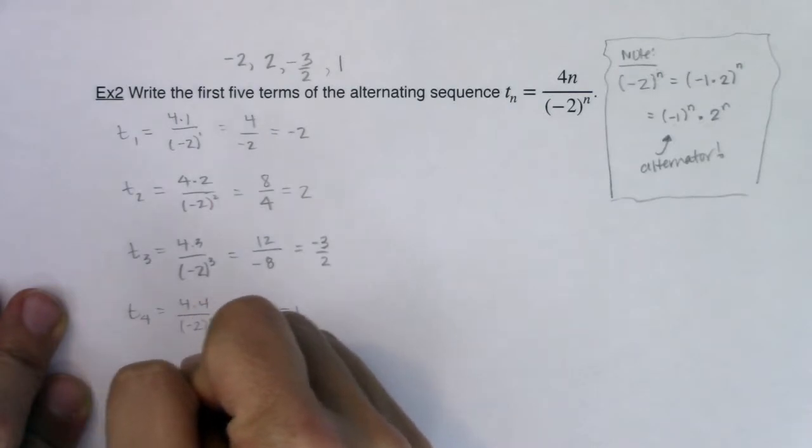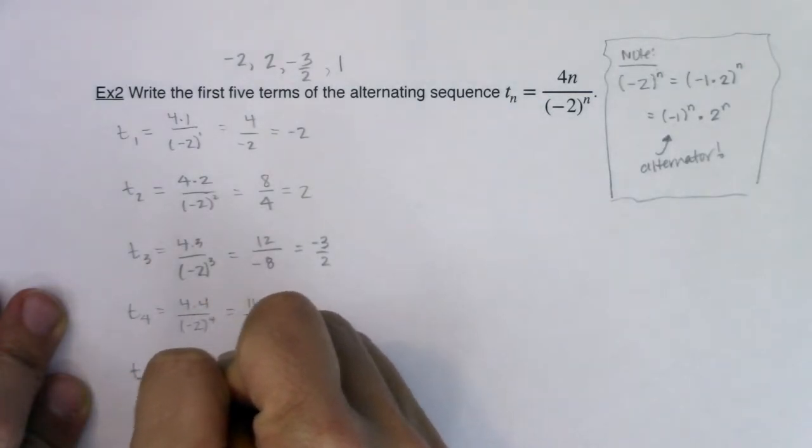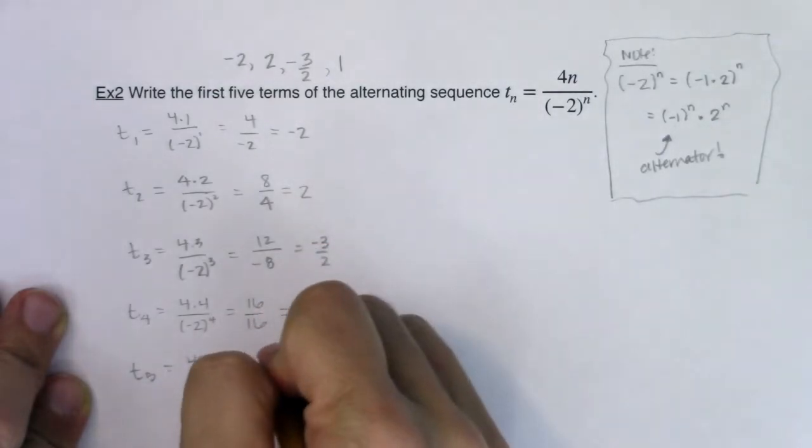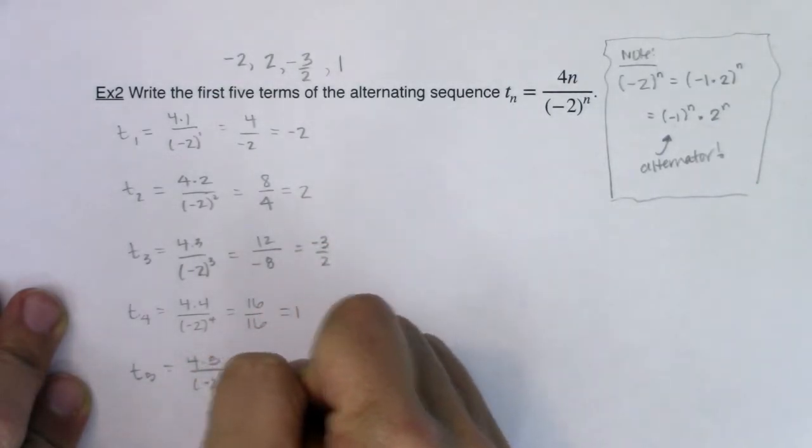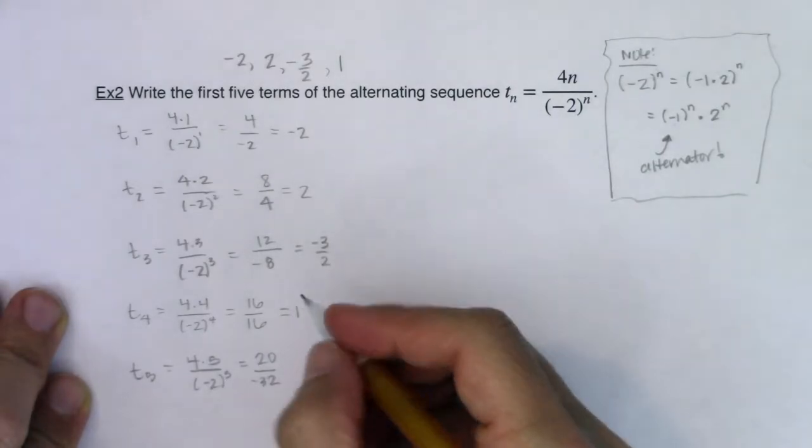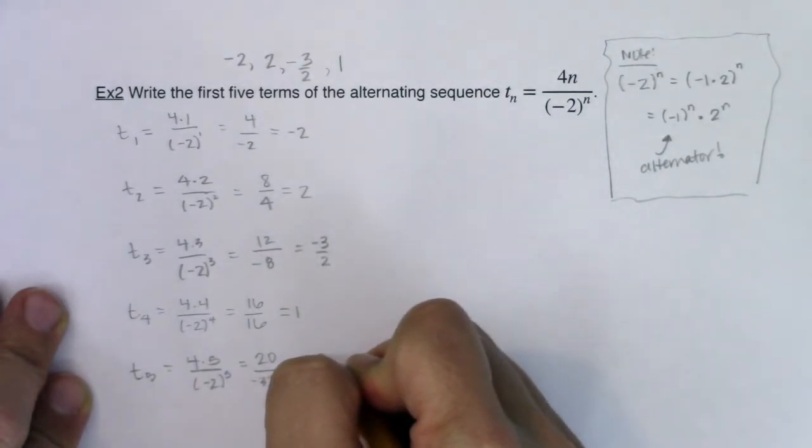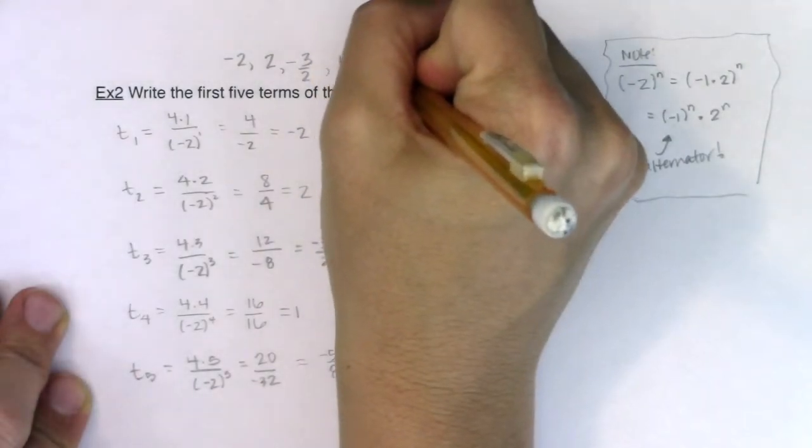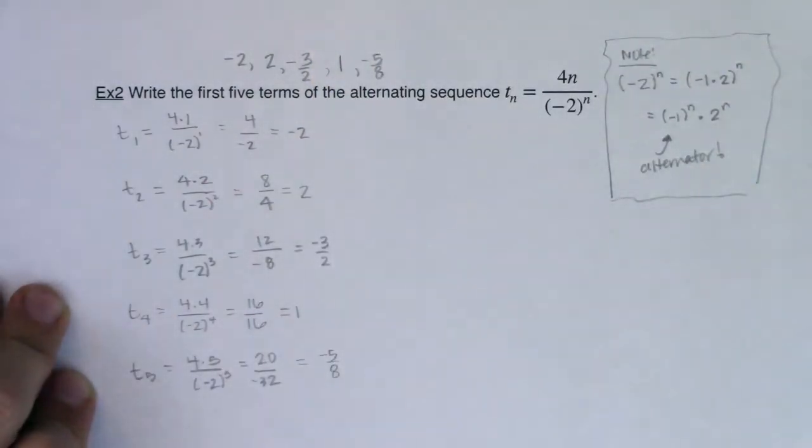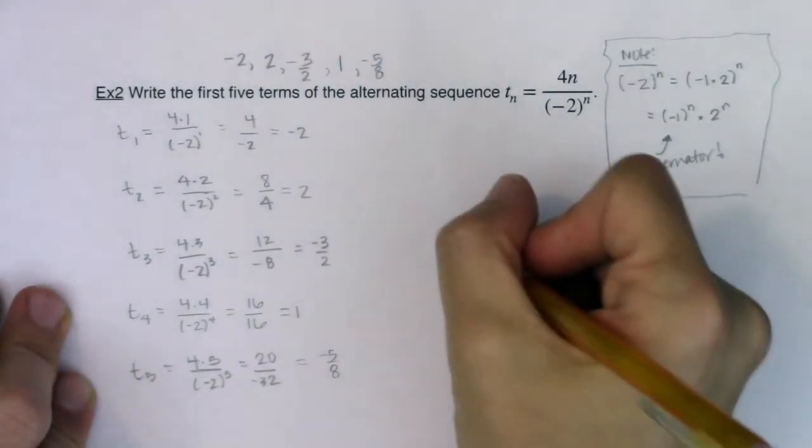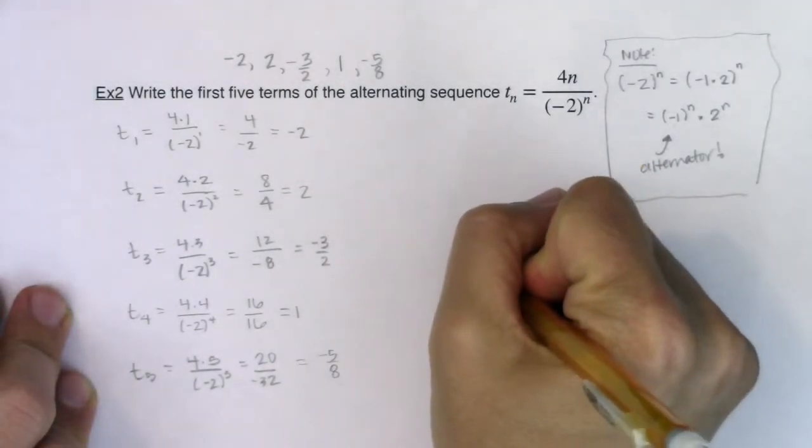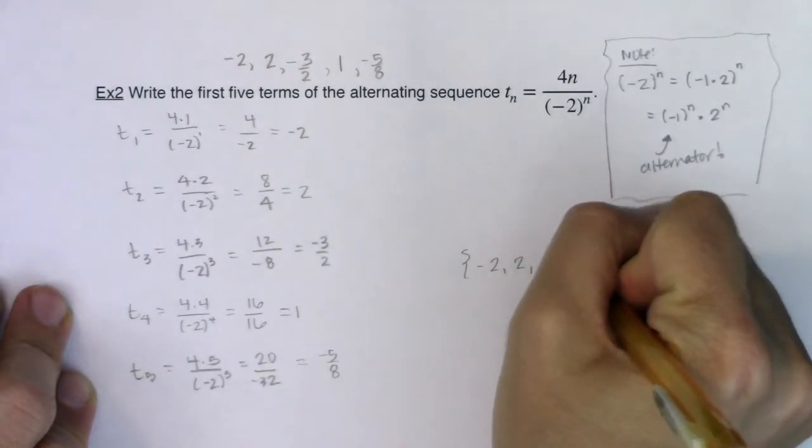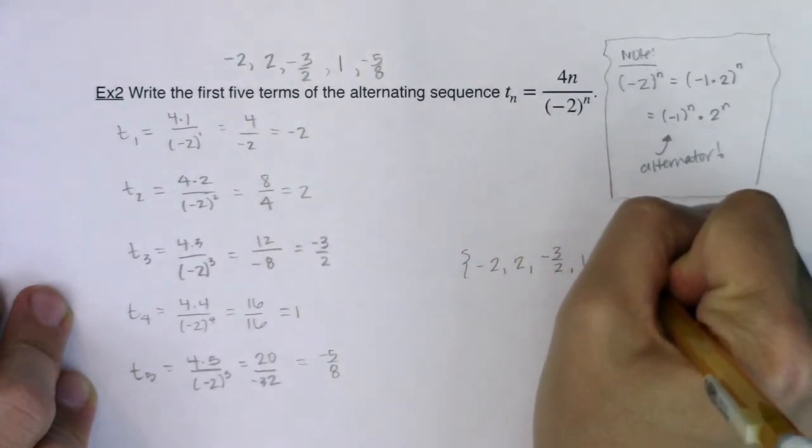So t sub 5 will be 4 times 5, and we've got negative 2 to the 5th. So that is 20 over negative 32. Those are both divisible by 4, so I think I'm looking at negative 5 8ths as the last term in my sequence. And if you want to use set notation, you could say that the first five terms were negative 2, 2, negative 3 halves, 1, and negative 5 8ths.